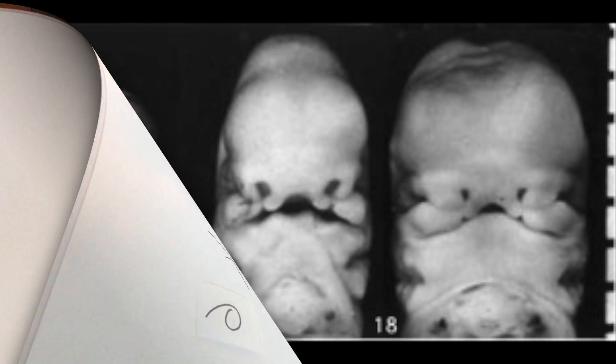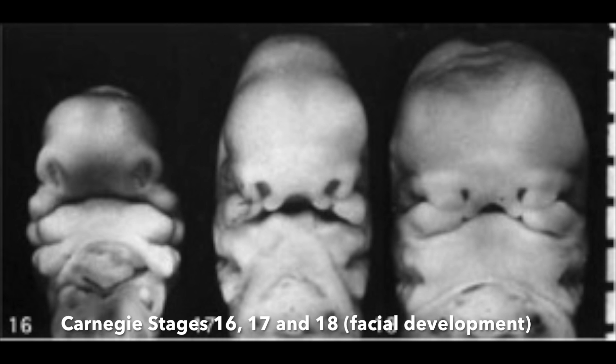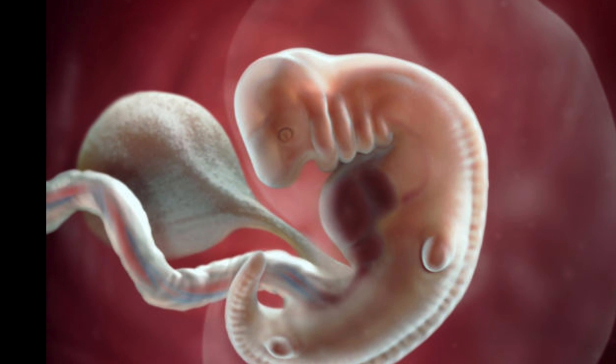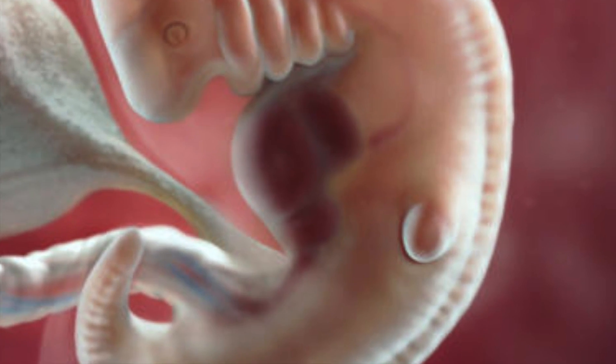In week six, the nose, mouth and ears are starting to take shape and the intestines and lungs are beginning to develop. The neck and trunk begin to straighten and the heart starts to pump blood throughout the body. It's about the size of a lentil.